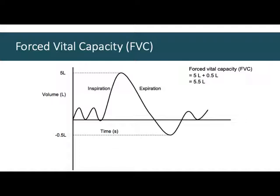If you want to be precise, the difference between two points is final minus initial. The final endpoint is −0.5 liters minus the initial starting point of 5 liters, which gives −5.5 liters. The negative symbol simply means 'out' — 5.5 liters left the body. It indicates directionality. The correct arithmetic way gives the same result, and the difference between these two points is forced vital capacity.